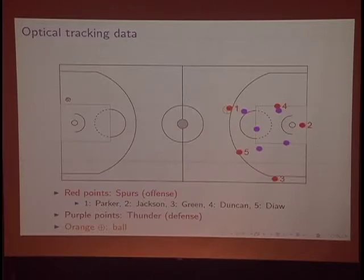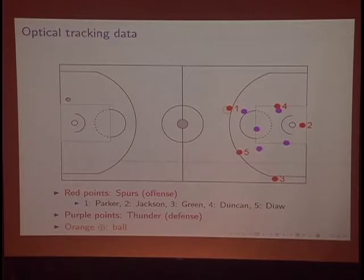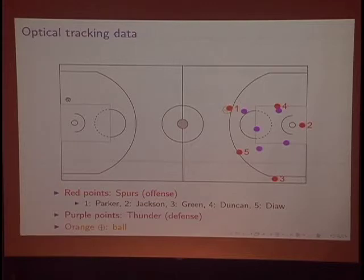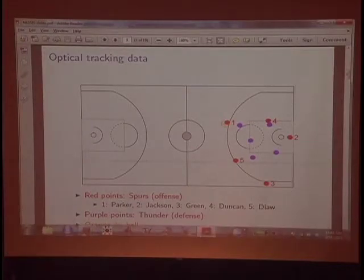What does this data actually look like? This is basically one sample from the dataset — it looks a lot different from the datasets you probably use in RStudio or other software. This is a particular possession, the Oklahoma City Thunder at San Antonio Spurs. The Spurs players are in red — we can see Parker, Jackson, Green, Duncan, and Diaw on the court, labeled with their numbers. That orange circle is the ball, so Parker's got it at the top of the arc. And of course, we also see this moving in time.